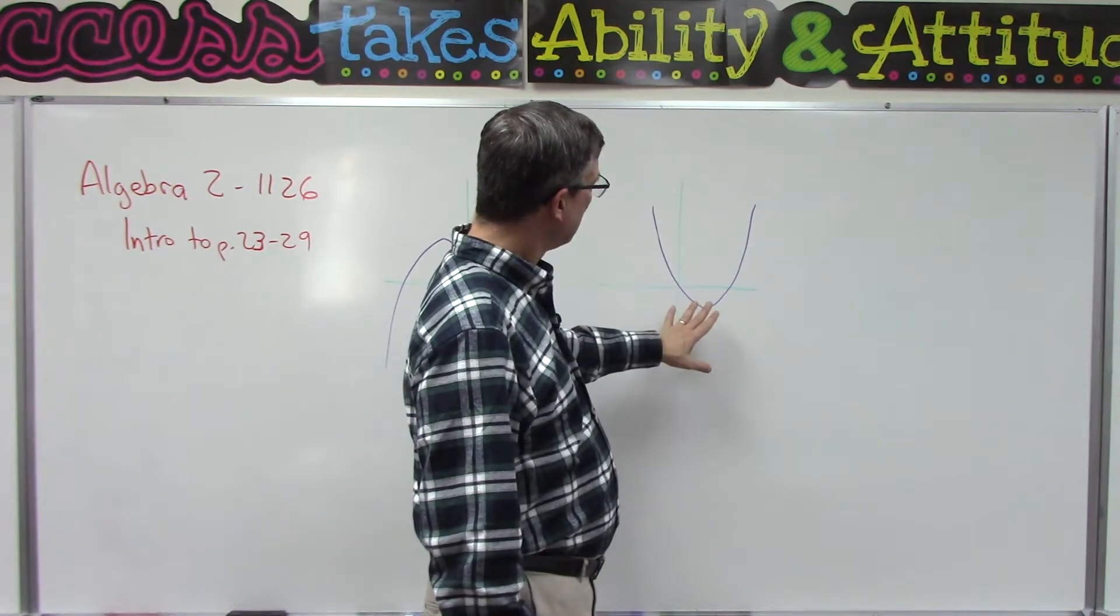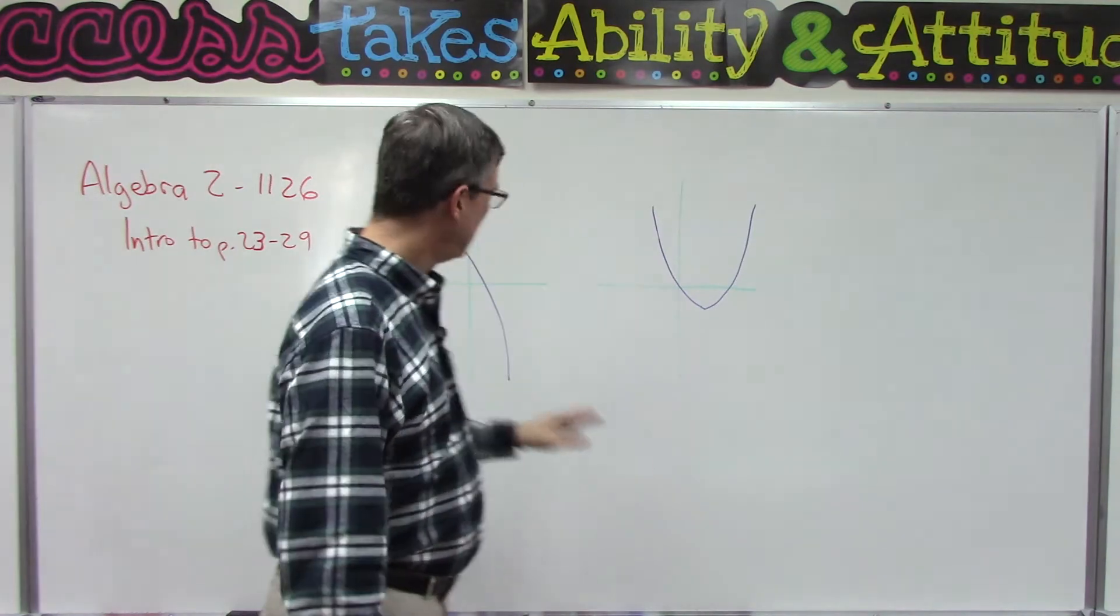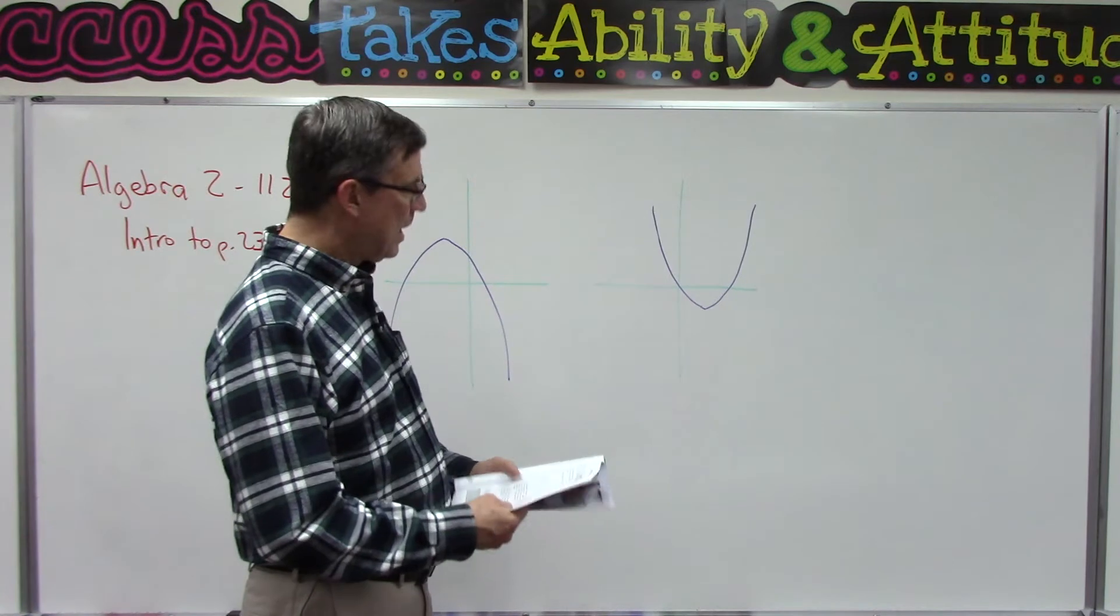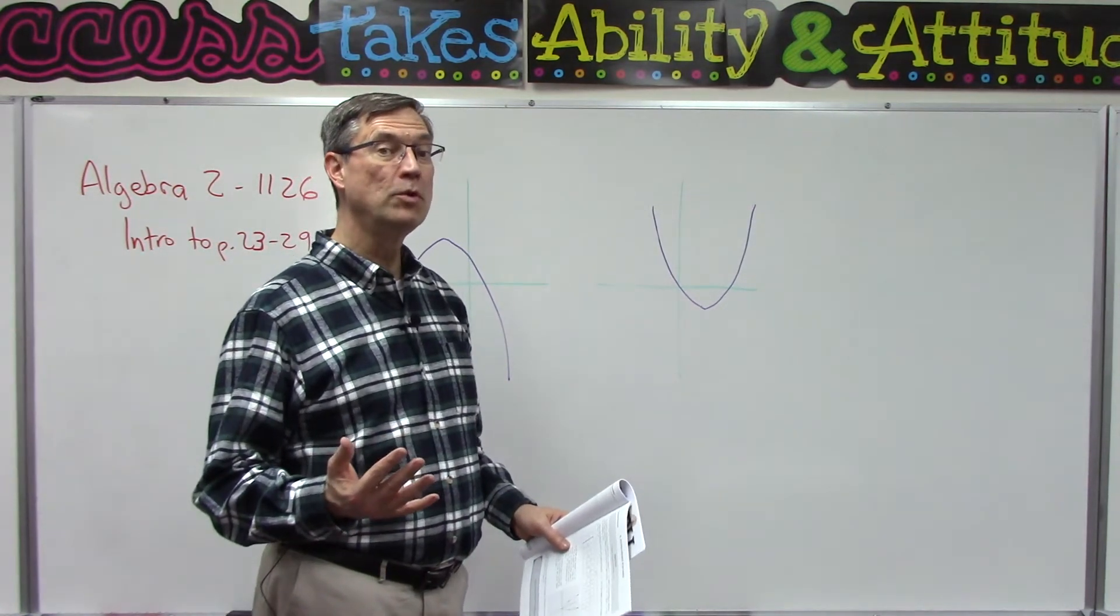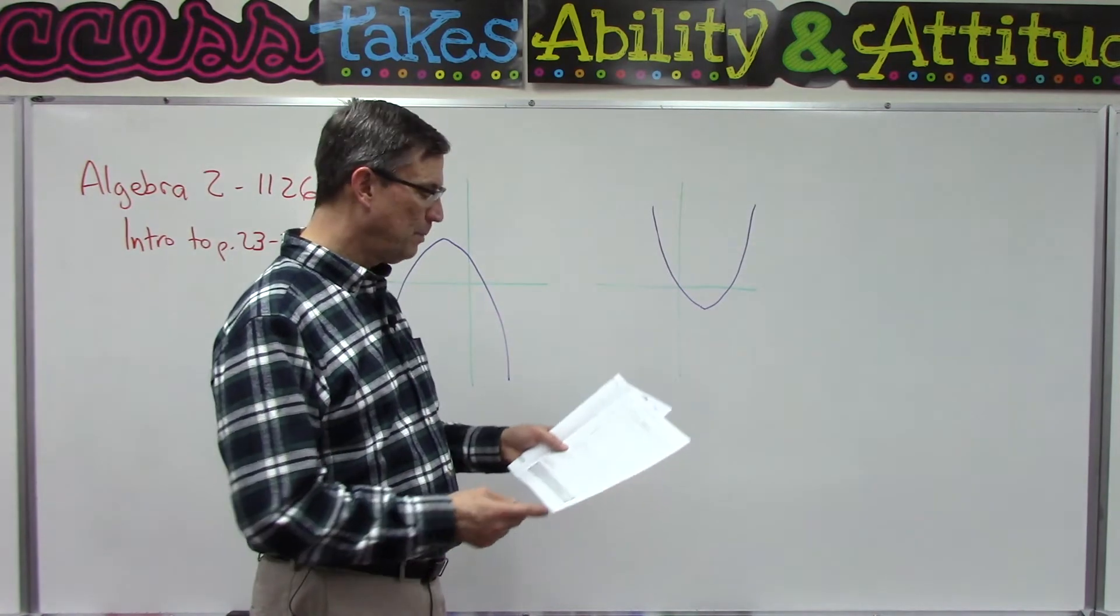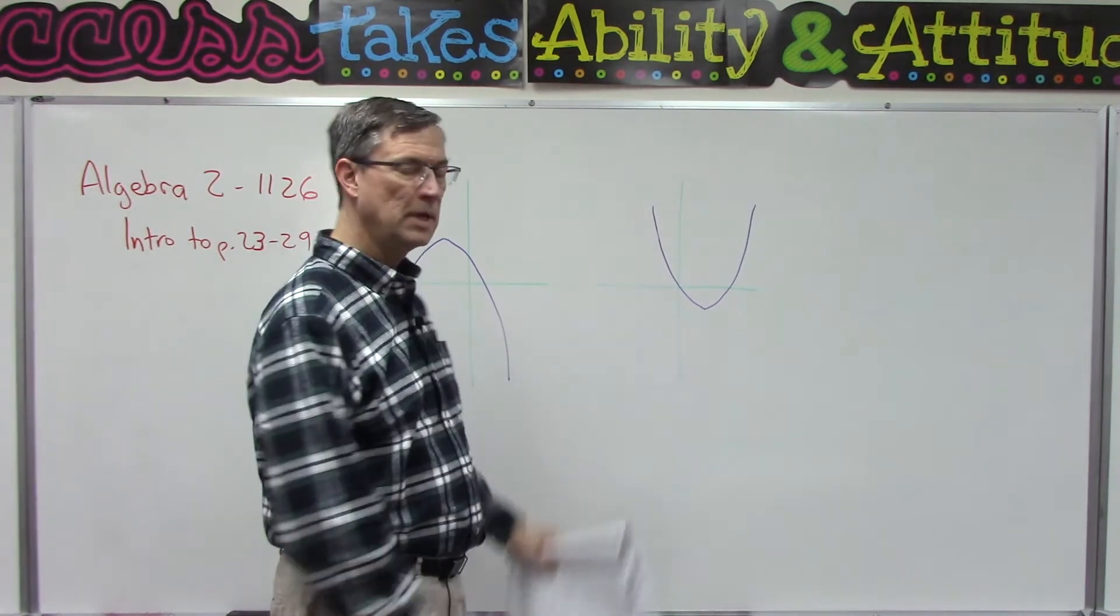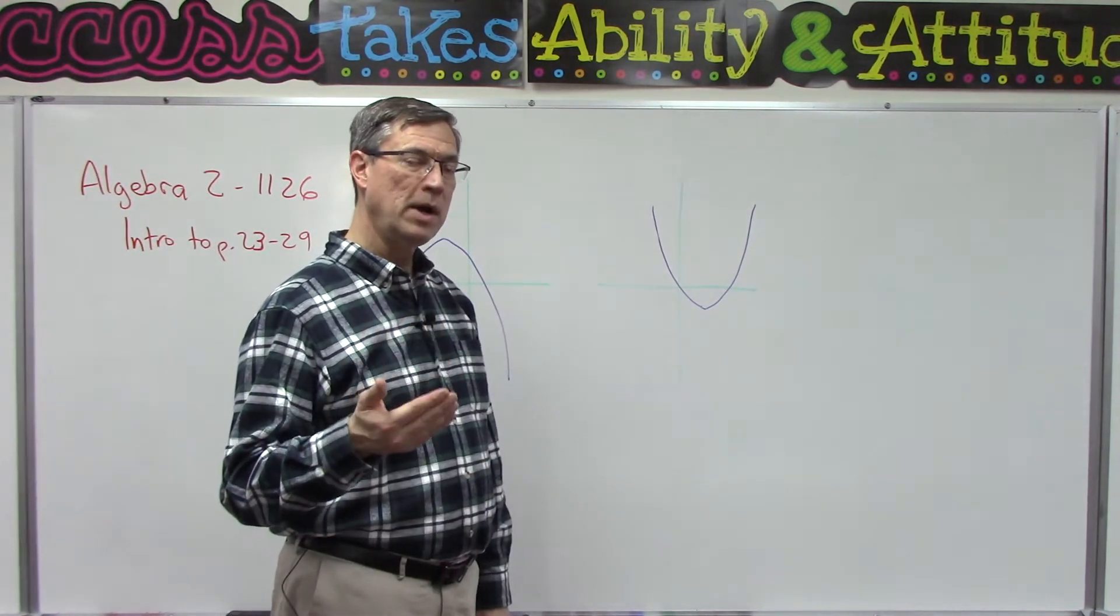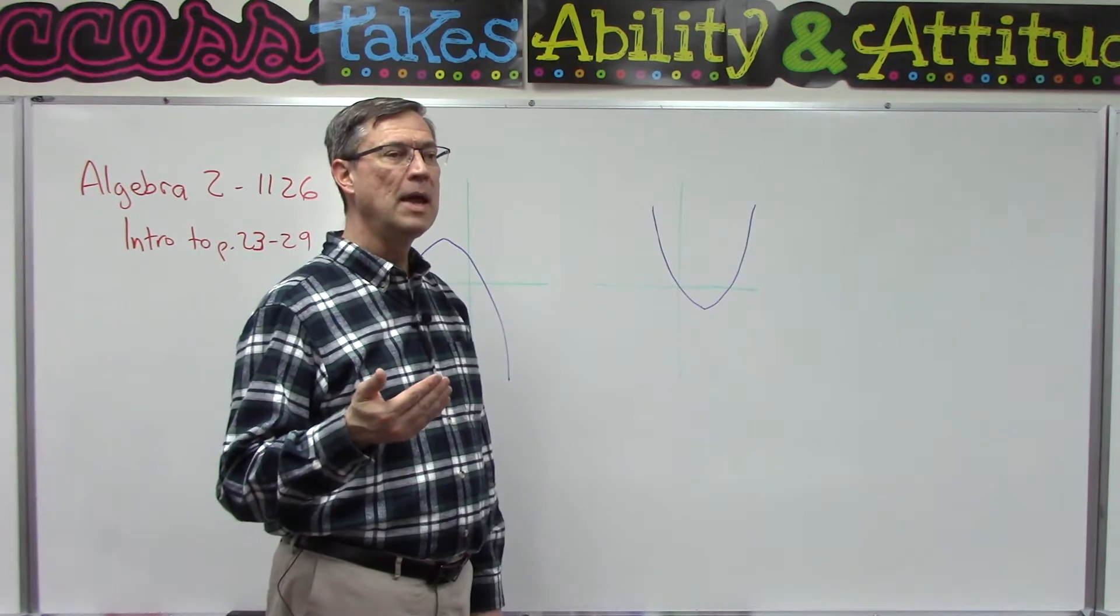Technically, this is called opening up, like a smiley face, and this opens down like a frowny face. At this point there's no easy way of doing it—we just have to make a table of values. They show one here on page 23, where you plug in 8 or 10 different points for x, then you square the x term to get the x squared value.